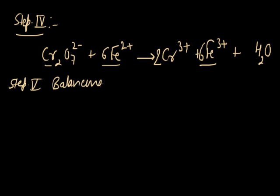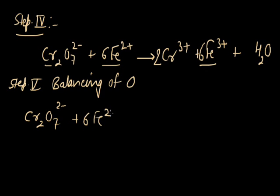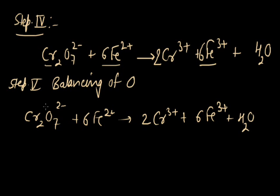Step 5: Balancing of oxygen. The equation is: Cr₂O₇²⁻ plus 6Fe²⁺ converts into 2Cr³⁺ plus 6Fe³⁺ plus H₂O. There are 7 oxygen atoms on the left but only 1 on the right, so we add 6H₂O to balance the oxygen. Now 1 plus 6 equals 7 oxygen atoms on the right, matching 7 on the left. Oxygen is balanced.